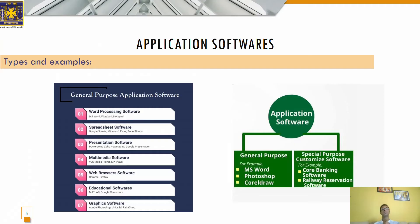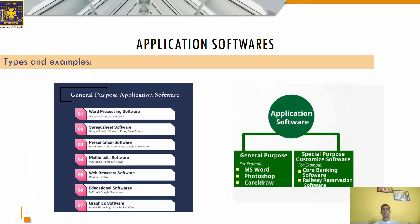Word processing software helps the user to create, edit, format, beautify, and manipulate text and other documents. You can change the font color and style according to your choice. Error checking, grammar checking, and spell checking are also available. Good examples of word processing software are WordPad, Notepad, and Microsoft Word, which has evolved through generations and the latest version is Microsoft Word 2023.